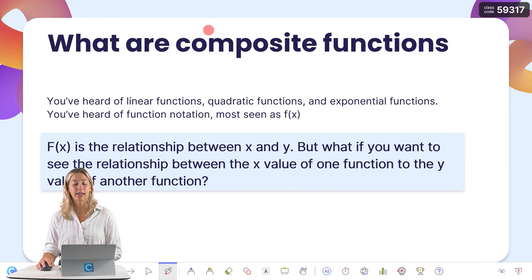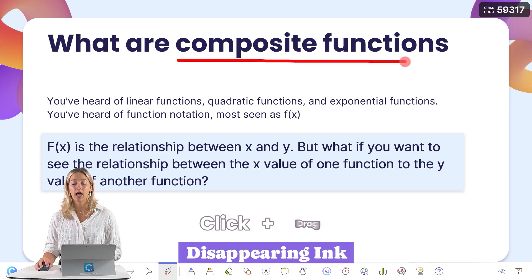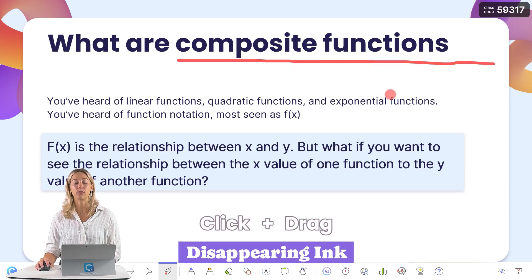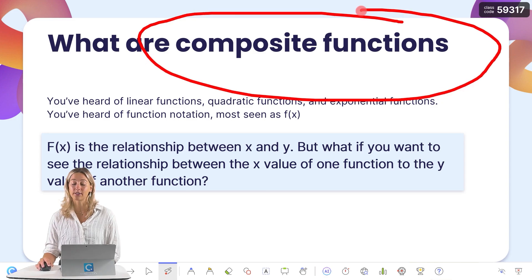To further highlight a part of your slide and draw attention to it, you can just click and drag with the laser and it will add that disappearing ink right onto your slide.